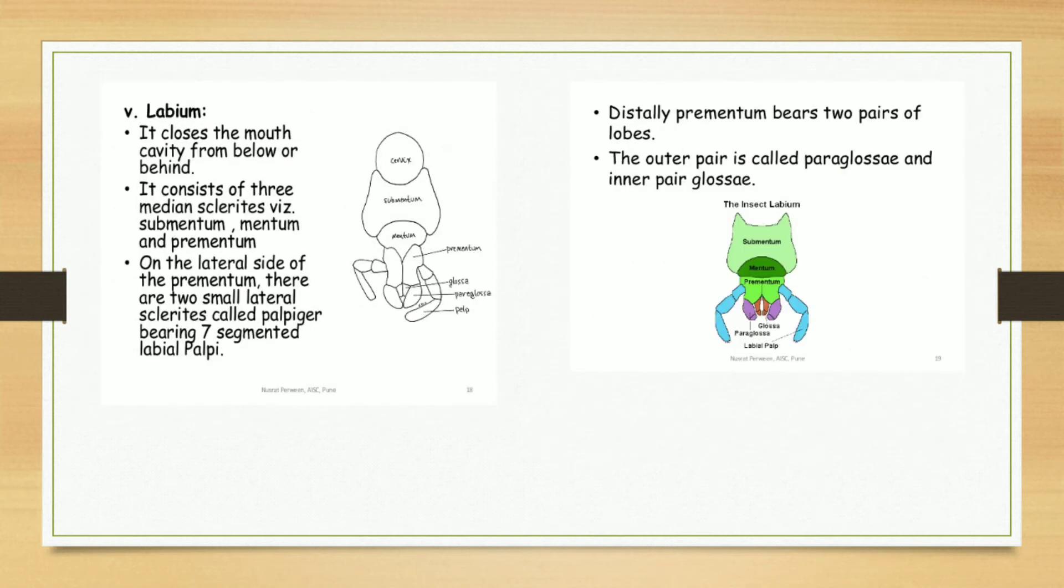Then the labium. Labium closes the mouth cavity from below or behind. It consists of three median sclerites: submentum, mentum, and prementum. On the lateral side of prementum there are two small lateral sclerites called palpiger, bearing seven-segmented labial palps. Distally, prementum bears two pairs of lobes—the outer pair is called paraglossae and inner pair called glossae.